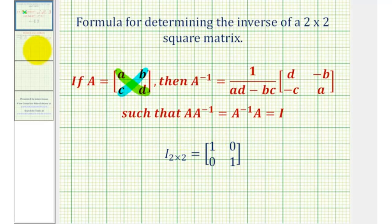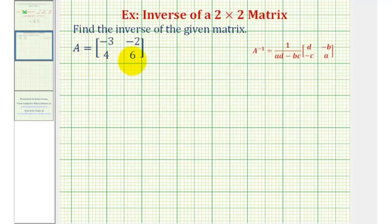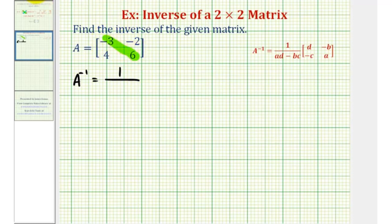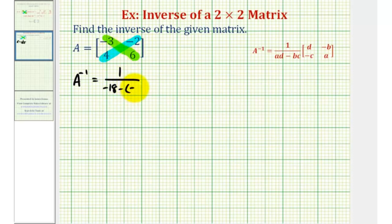So let's look at our example. We want to find the inverse of matrix A. So A inverse is going to be equal to one divided by the quantity A times D, or negative three times six, minus B times C, or negative two times four. So we would have negative three times six is negative eighteen, minus negative two times four, that's negative eight.